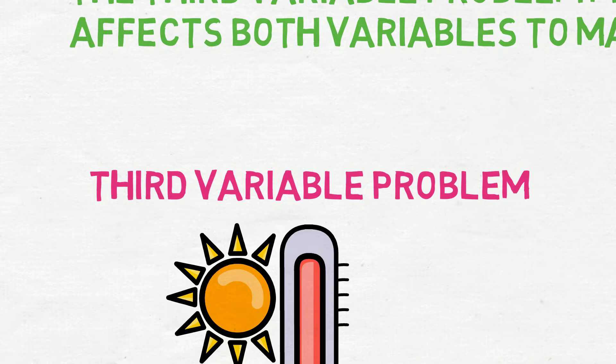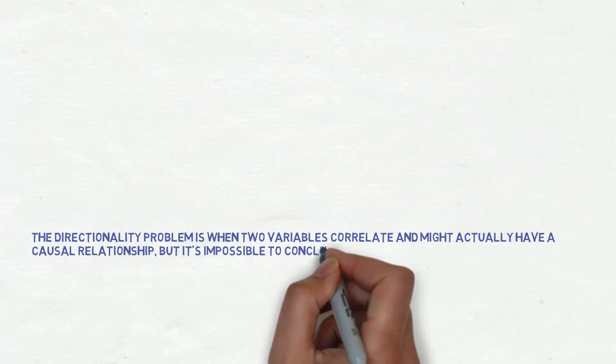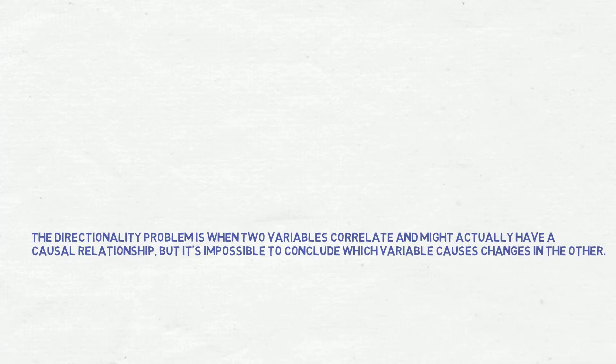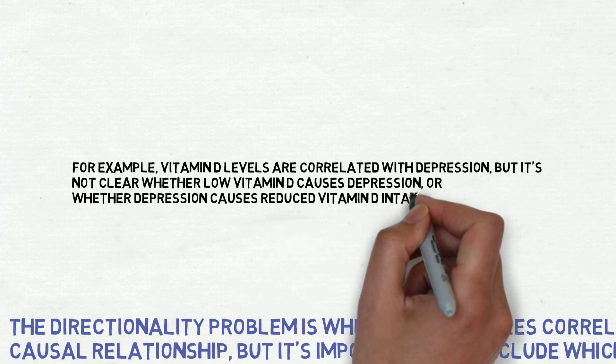The second reason is the directionality problem. It is when two variables correlate and might actually have a causal relationship, but it's impossible to conclude which variable causes changes in the other. For example, vitamin D levels are correlated with depression...